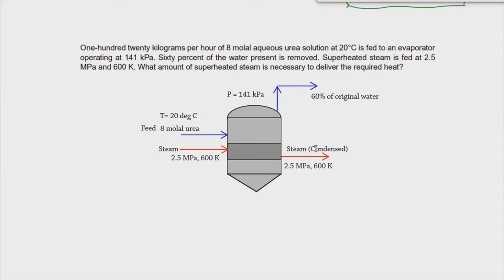Taking into consideration our material balance, this steam didn't actually get reduced during the process. Lastly, we have the liquor going out at the bottom. The problem didn't specify the concentration of the liquor, but we can obtain it because we've already been given the amount of vapor based on the original water. The illustration is now complete.